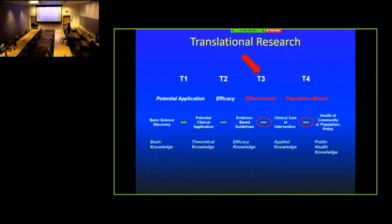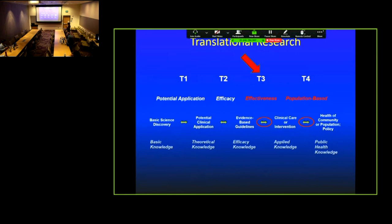The kind of science we're talking about is T3, which is one step beyond efficacy trials conducted under highly controlled situations — these are effectiveness studies in the real world — and T4, where we're talking about translation through whole populations, sort of the realm of public health or policy.